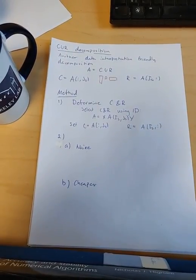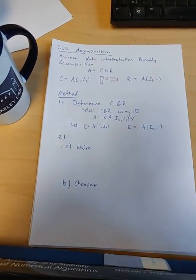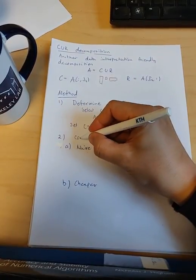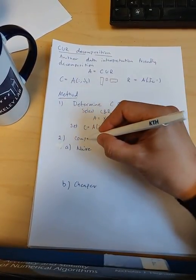Okay, now we have C and R. So we need to compute U, which can be done in two ways.